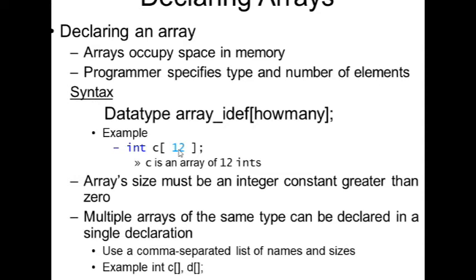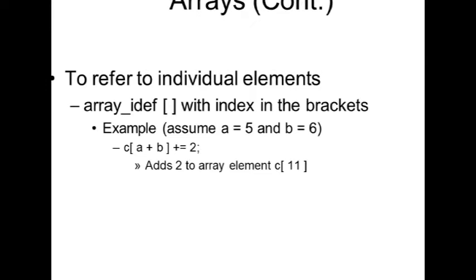The array size must be an integer constant greater than zero. Multiple arrays of the same type can be declared in a single declaration using a comma-separated list. To refer to individual elements, use the index in square brackets.